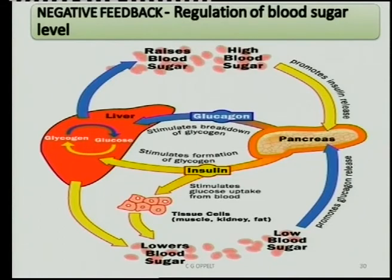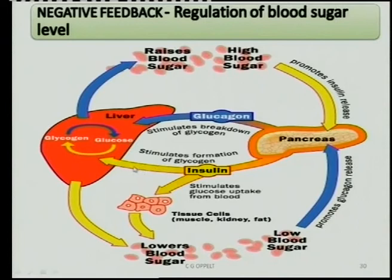When we talk about negative feedback with blood sugar levels, it's about the pancreas secreting its two hormones: glucagon and insulin. Insulin is secreted when there's a high blood sugar level; when it drops, insulin secretion stops. When the blood sugar level drops too low, glucagon secretion is stimulated to raise it again. Then when it's too high again, the whole cycle starts over.